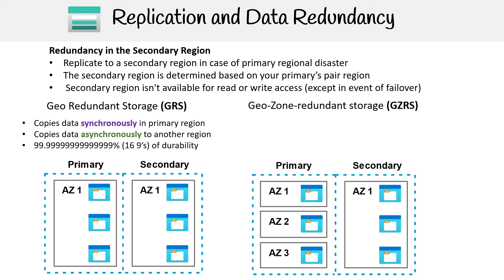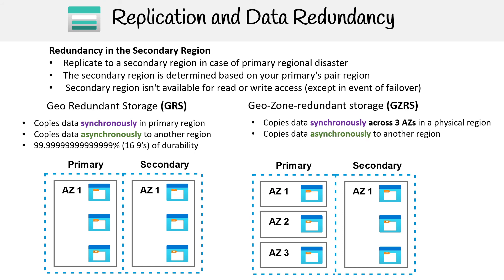The durability here is 16 nines. Moving over to GZRS, data is copied synchronously across three availability zones in a physical region, and then the data is copied asynchronously to another region. The data in the secondary region is not necessarily in three other availability zones — at least that's what the graphic shows.